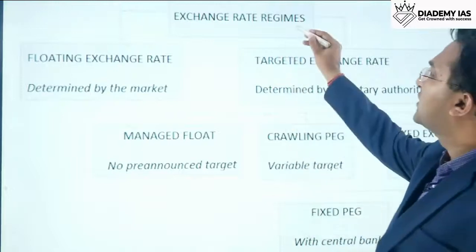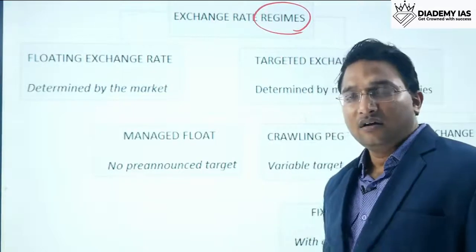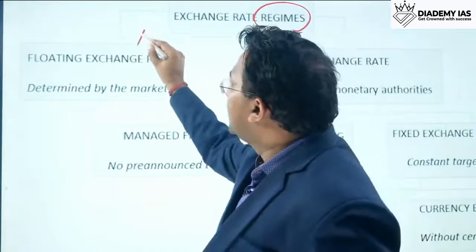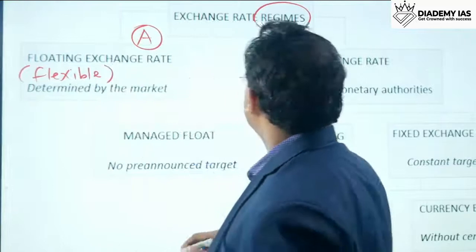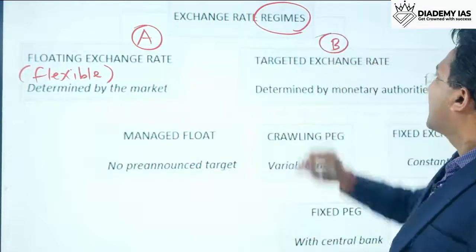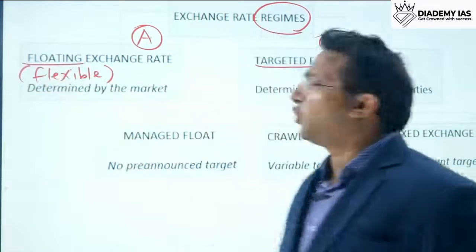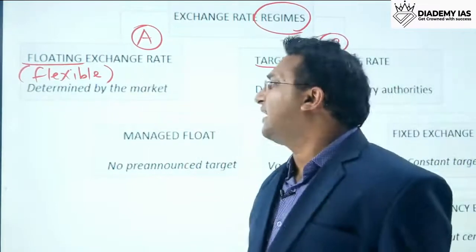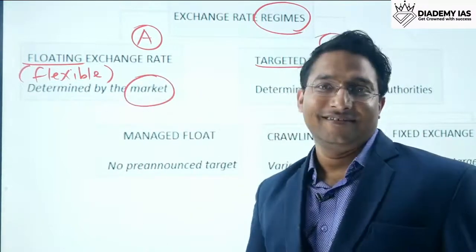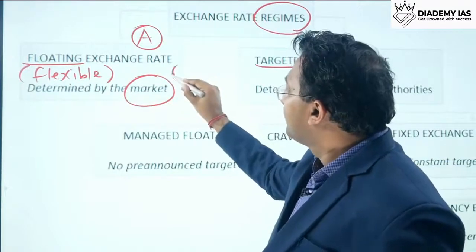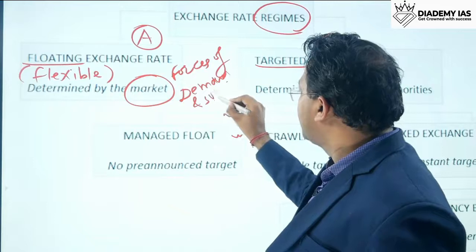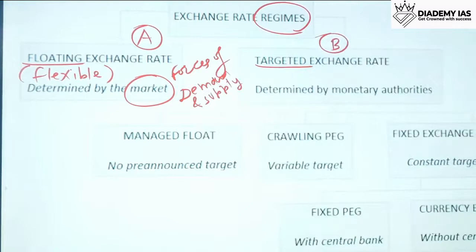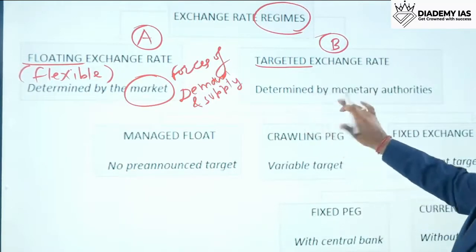There are primarily two categories of foreign exchange rate regimes. One is the floating exchange rate, also called the flexible exchange rate. Another is the targeted exchange rate. In the floating exchange rate, the exchange rate is determined by the market — that is, the forces of demand and supply. In the targeted exchange rate, the exchange rate is determined by monetary authorities.